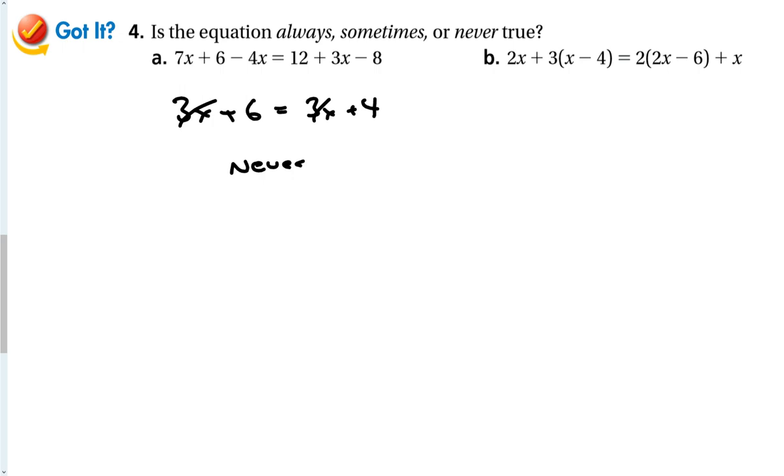Now, let's try this one. A little more complicated, but we can do it. 2x plus 3x minus 12. I'm just distributing right now. Minus 12 plus x. So we get our 5x minus 12. 5x minus 12. The variables cancel. Negative 12 and negative 12. And this is always true.